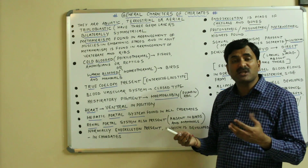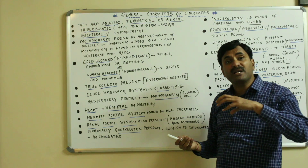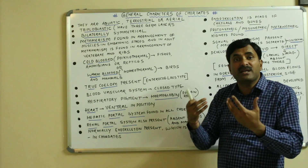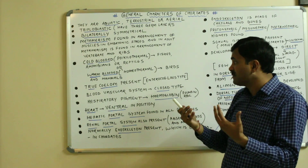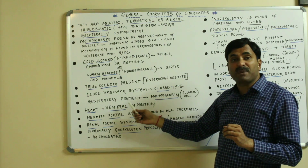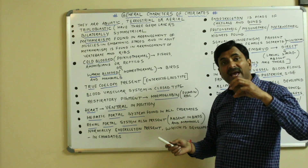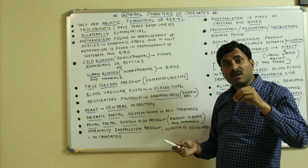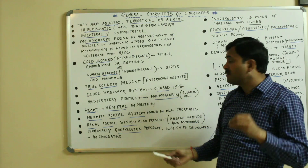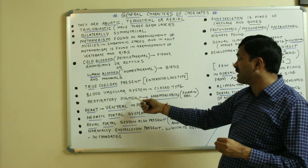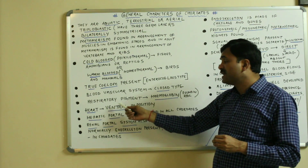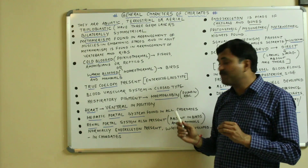The blood vascular system is of closed type, meaning the blood is not flowing in open spaces but in closed blood vessels. The respiratory pigment found in chordates is hemoglobin — a red-colored pigment present in the RBCs.